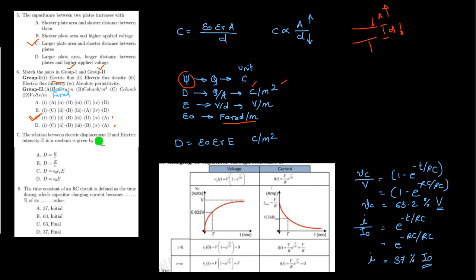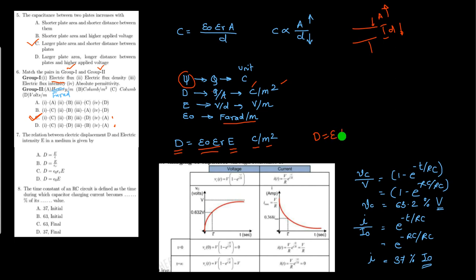Next: the relation between electrical displacement density D and electrical field intensity E in a given media. D = Epsilon₀ · Epsilon_R · E, measured in coulombs per meter squared. D equals absolute permittivity of the media multiplied by electrical field intensity. The correct answer is option C.